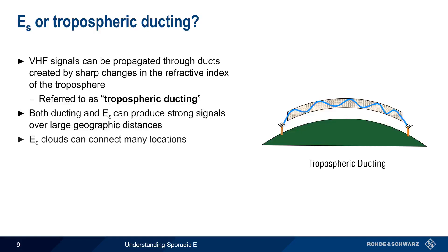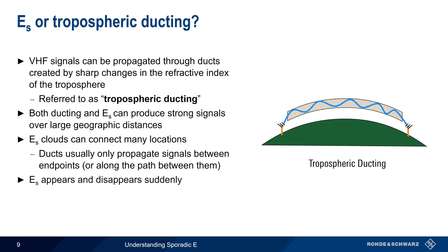As we saw earlier, sporadic E clouds can connect many different locations, whereas in ducting, signals usually only propagate between endpoints, or sometimes along the path between them. Sporadic E tends to appear and disappear rather suddenly, but tropospheric ducting normally builds up and fades out more slowly, and thus also tends to last longer than sporadic E clouds.